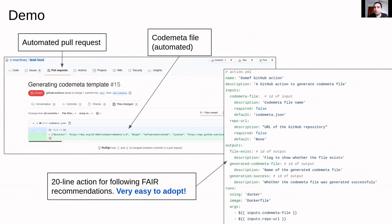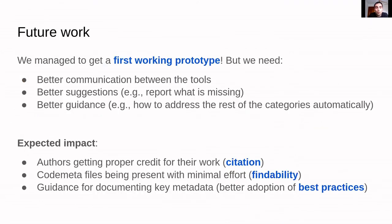As a demo, I'm going to present a few screenshots because it takes a little bit of time to run. The high-level overview is that we have created a series of test repositories and an integrated repository on GitHub, where by adding this workflow on the right — which is just a copy-paste of a few lines of code — you will automatically get a pull request every time you make new changes to your repository, with a suggested codemeta file.